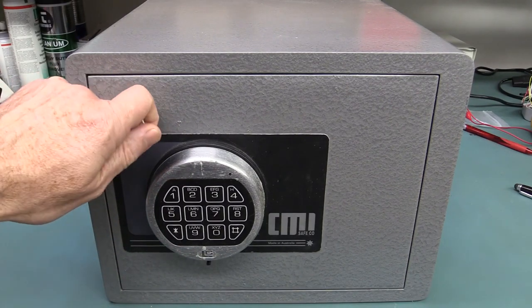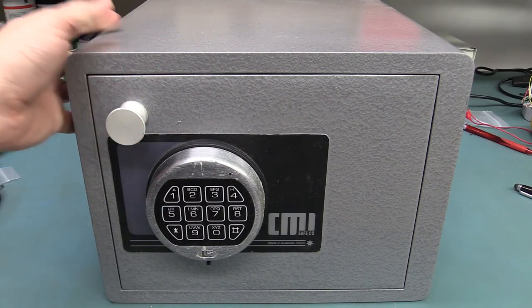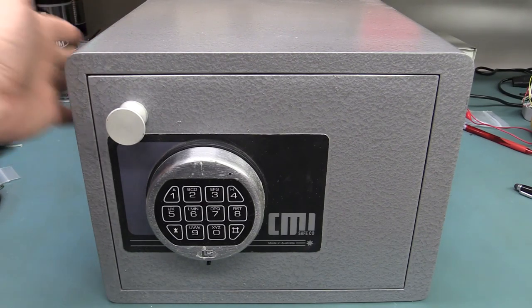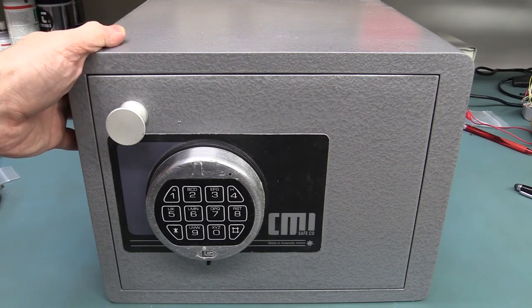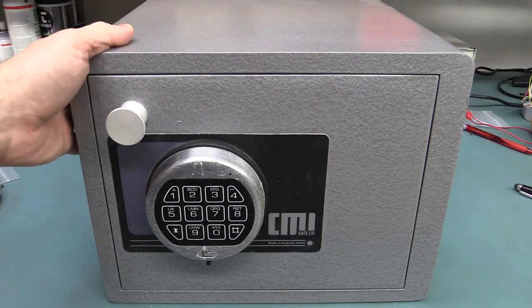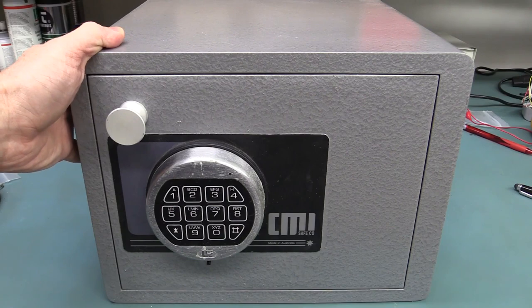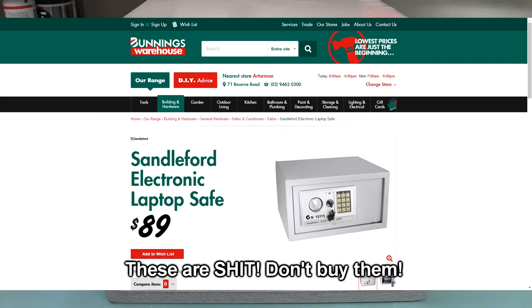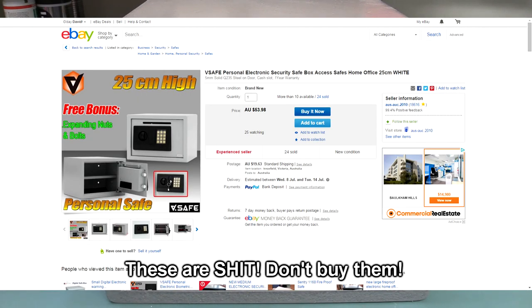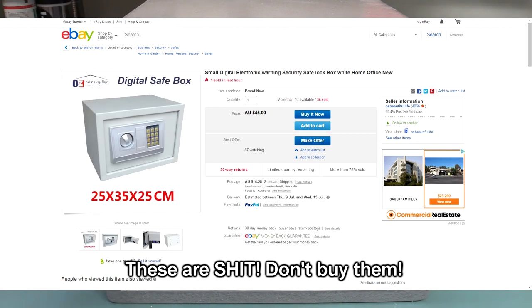This is a CMI-branded safe. They make really top-quality safes here in Australia, here in Sydney. This is one of their basic home models, the H2D. It's a pretty entry-level home safe, probably the absolute minimum you'd want to actually protect anything, as opposed to those pieces of shit that you get at Bunnings or Home Depot. This is like a $700-$800 safe, about the minimum you can get.